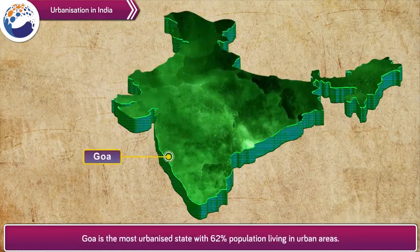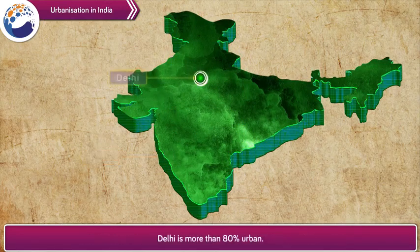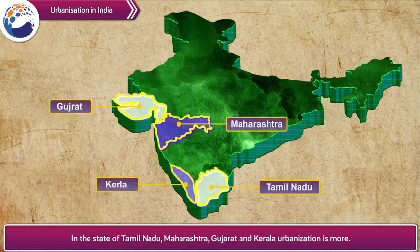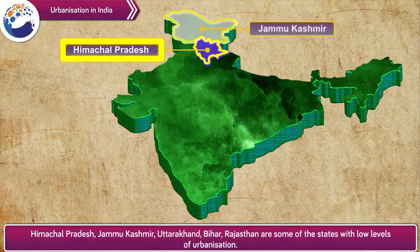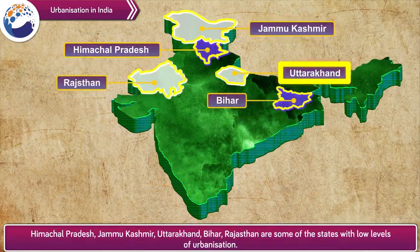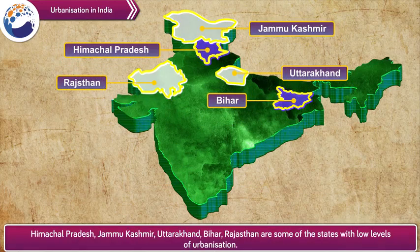Goa is the most urbanized state with 62% of its population living in urban areas. Delhi is more than 80% urban. In the states of Tamil Nadu, Maharashtra, Gujarat, and Kerala, urbanization is more. Himachal Pradesh, Jammu & Kashmir, Uttarakhand, Bihar, and Rajasthan are some of the states with low levels of urbanization.